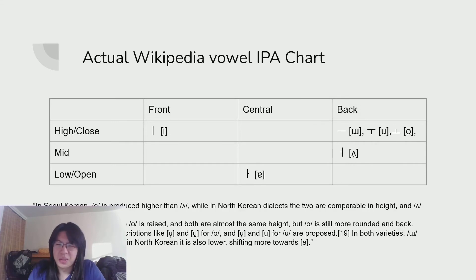But then if you actually check the Wikipedia page for Korean phonology, it puts it like this. And with a couple extra lines and with some explanation on the Wikipedia page, in Seoul Korean, o is pronounced higher than ʌ, while in North Korean the dialects too are comparable in height, and ʌ is more fronted. So obviously excluding the North Korean part, o is produced higher than ʌ, and assuming ʌ is mid, that means o is actually a high vowel.